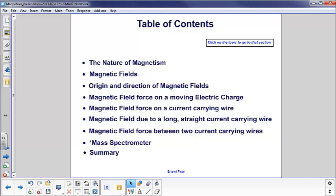Then we'll launch into a discussion on magnetic fields, very similar to what we did with electricity with electric fields. The origin and direction of these magnetic fields will be presented, and then various kinds of forces. The magnetic field force on a moving electric charge, on a current carrying wire. The magnetic field due to a long straight wire. The magnetic field force between two current carrying wires. Finishing up with a practical application of electric and magnetic fields, the mass spectrometer.